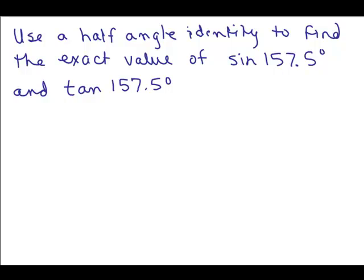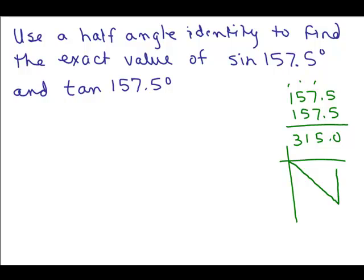And half an angle identity, the hint is this is half of some special angle hopefully. So let's check out. What is twice that? That would be 315 degrees. And yes, 315 degrees is one of your special angles. It's in quadrant 3, that's the 45 degree angle right here. So that is 315 degrees.